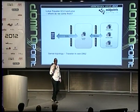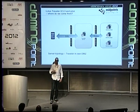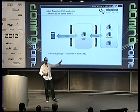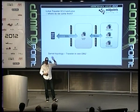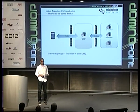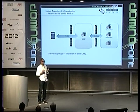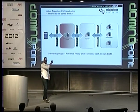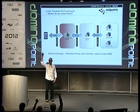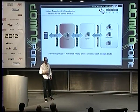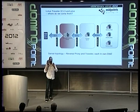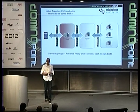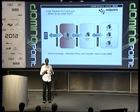Let's look at a normal server topology as you can see it at a lot of customer sites. You can run Traveller directly in the DMZ — some customers do that because they don't want additional reverse proxies. Another way is to add a secure reverse proxy like Lotus Mobile Connect, which should make your environment more secure. Your mobile devices connect to the reverse proxy, then to the Traveller server, and back on the Notes side to the Domino mail servers.